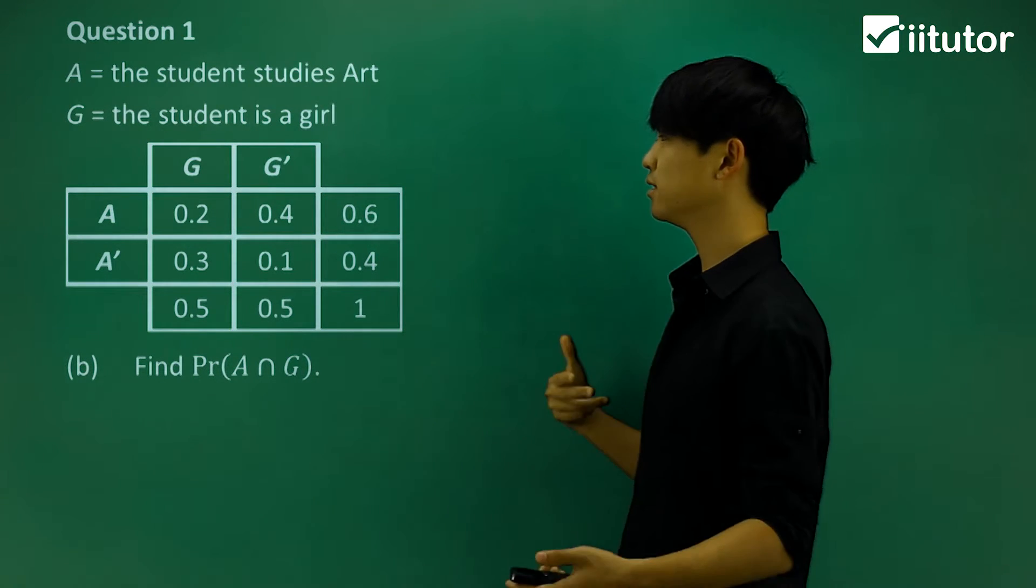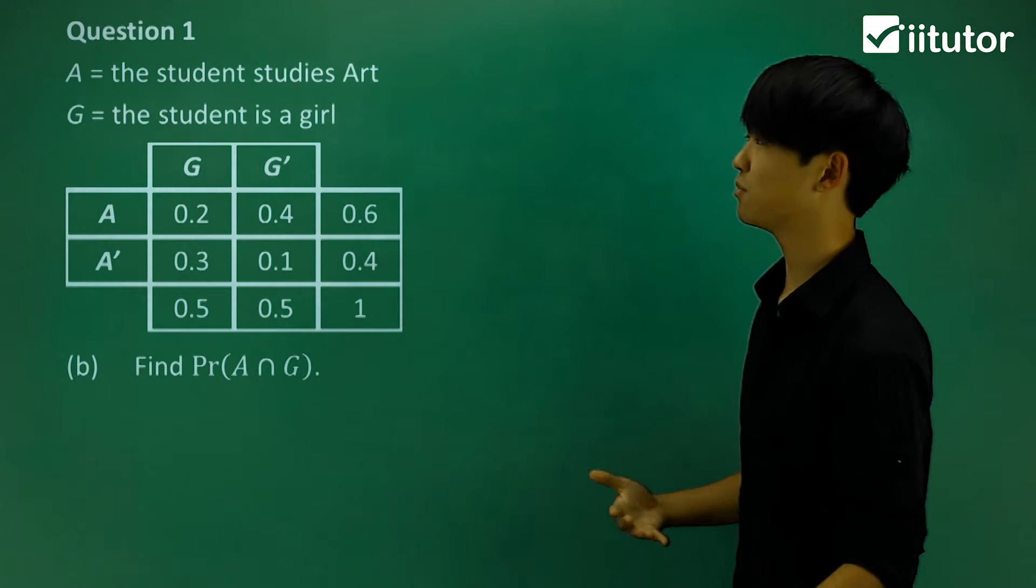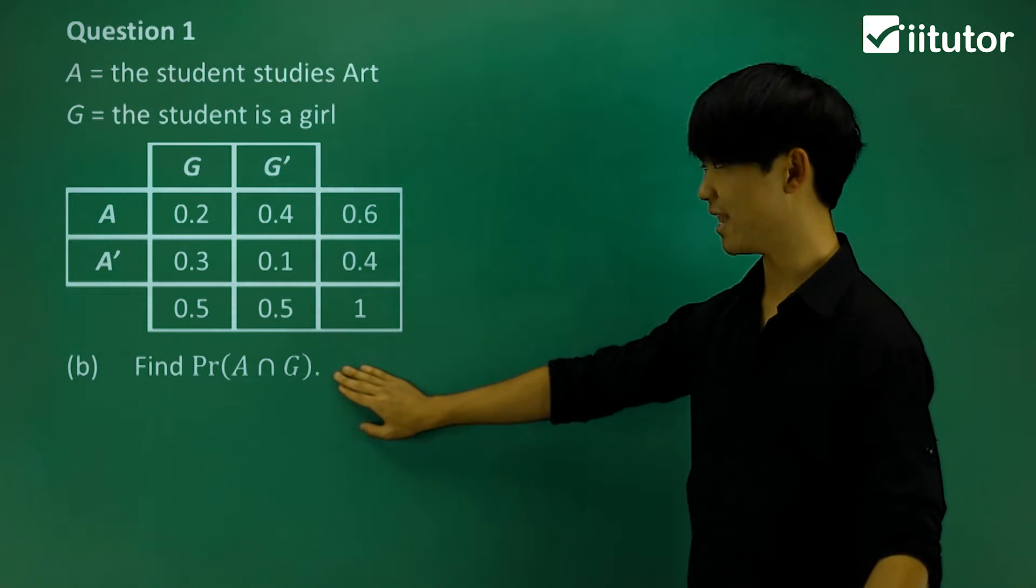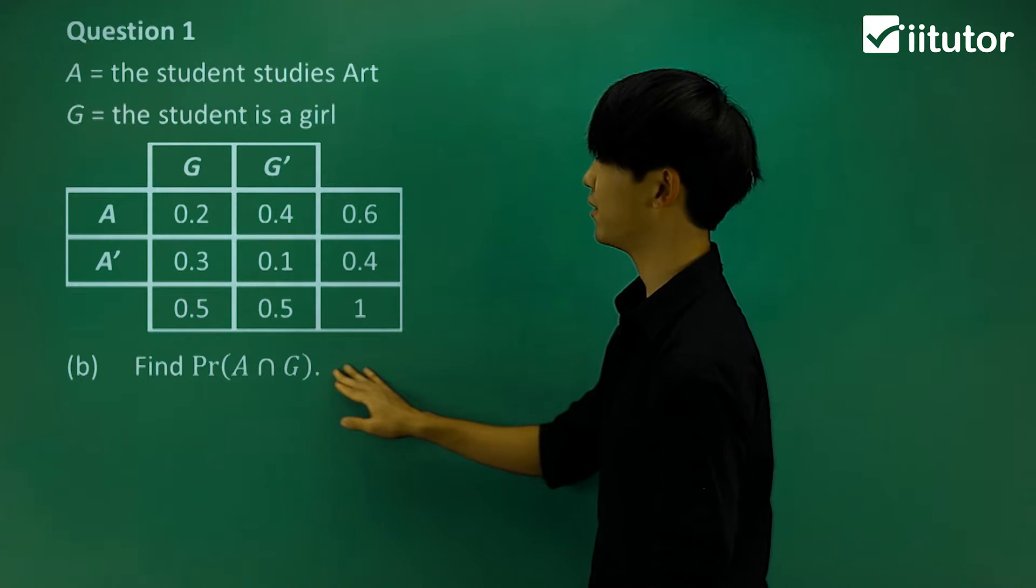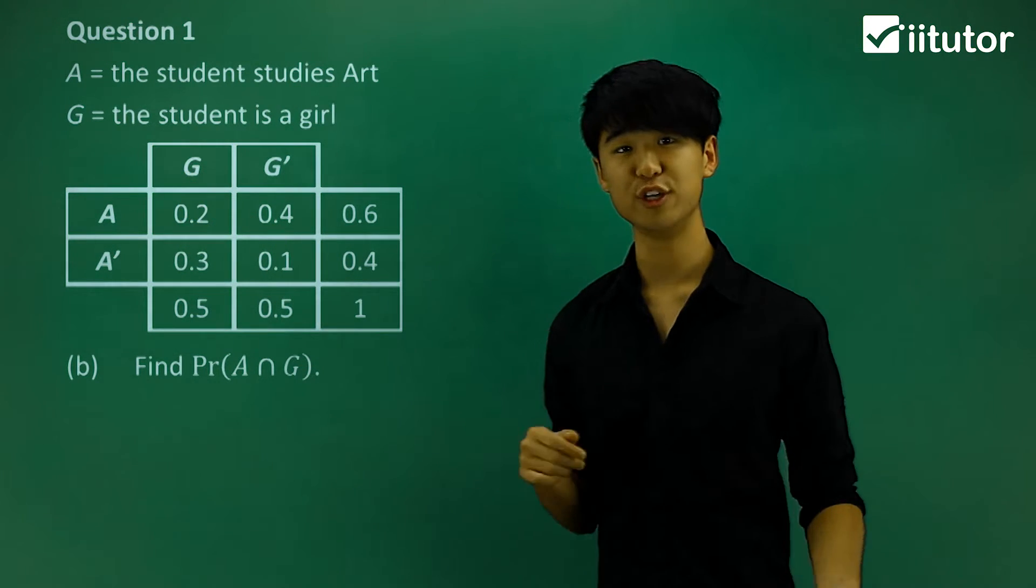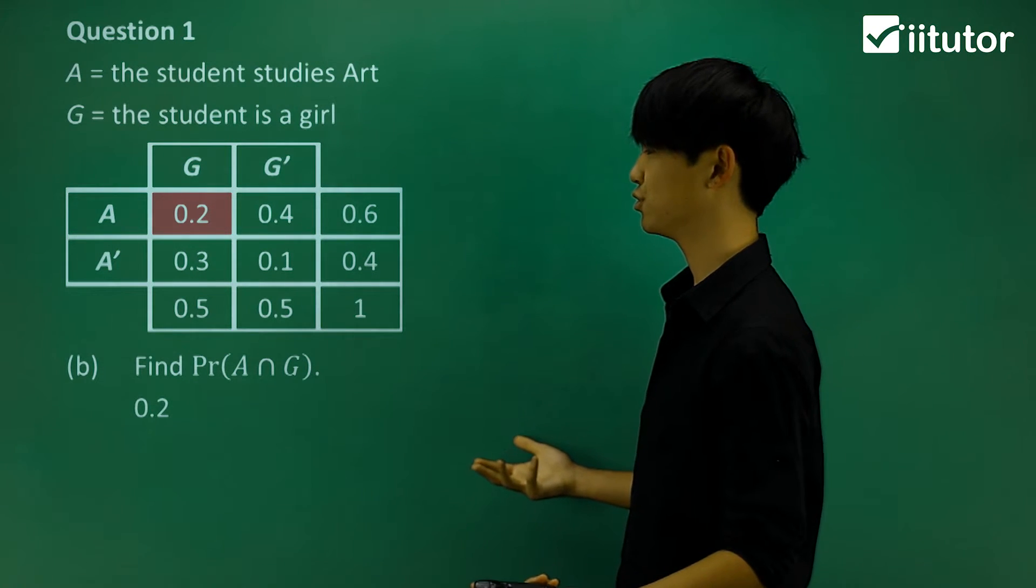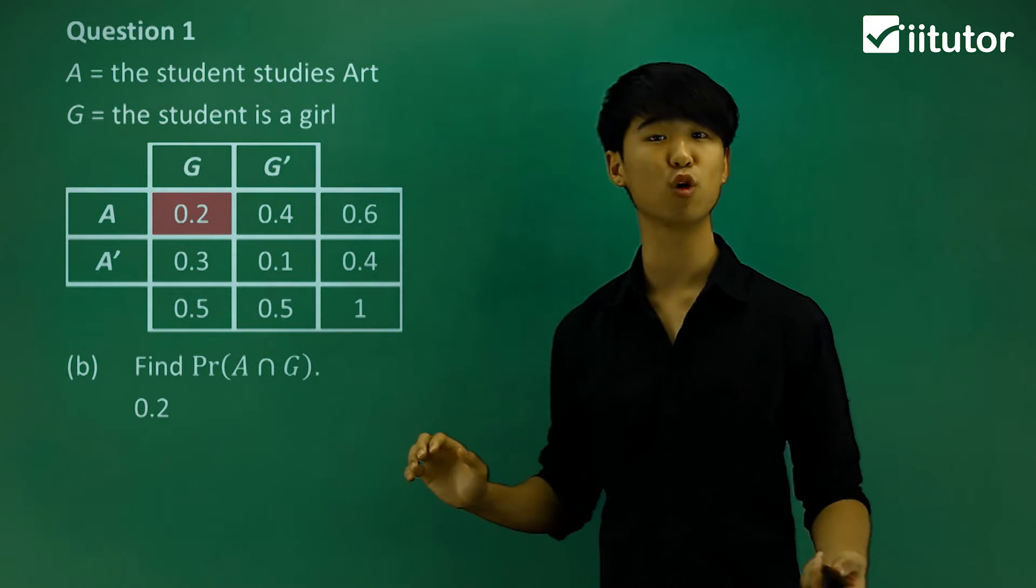Now let's move on to part B. We're going to answer some of the probability questions. It says, find the probability of event A and event G occurring. So A and G, that's that box there. So the answer is 0.2. Not too hard, we're just going to read off this probability table.